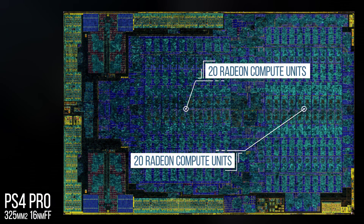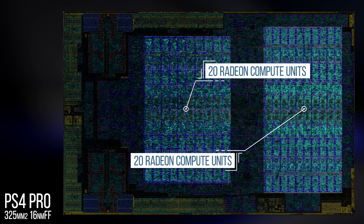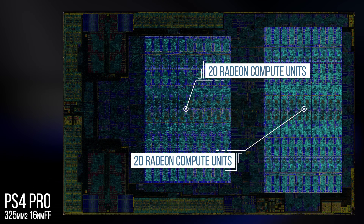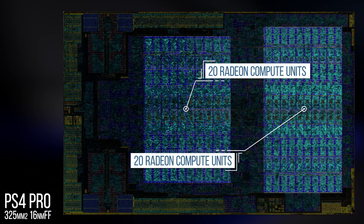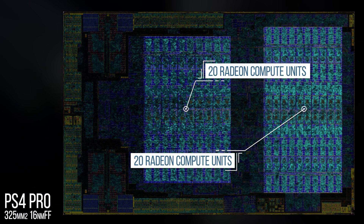We know that the Pro has 36 compute units, and you can see those here in two banks of 20 — 20 each side for 40 in total. 4 CUs are disabled, and this is to allow chips with slight defects from the production line to still be used in final hardware, saving a ton of cash. When I talked to Mark Cerny, he mentioned that the GPU was kind of like the wings of a butterfly — the amount of compute units is doubled from the base PS4's 18 to the Pro's 36. What I found interesting is that the second bank of CUs on the right are actually taller and narrower than those on the left — perhaps some kind of layout optimization.